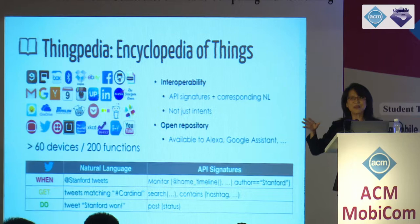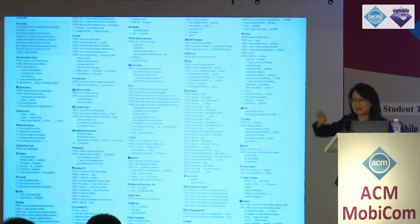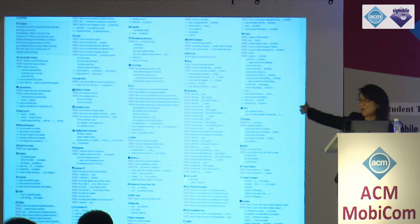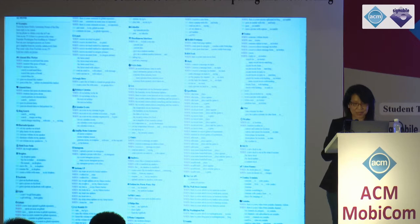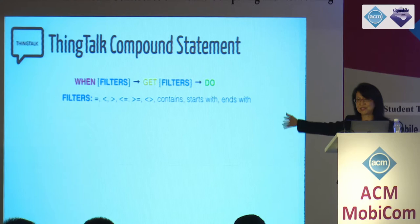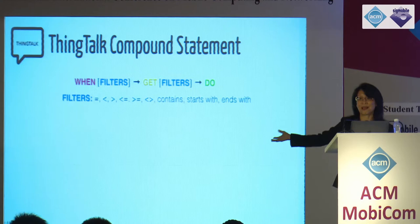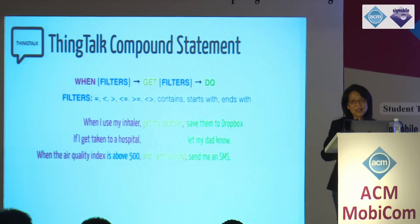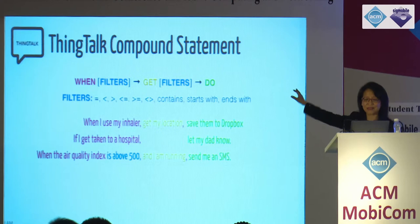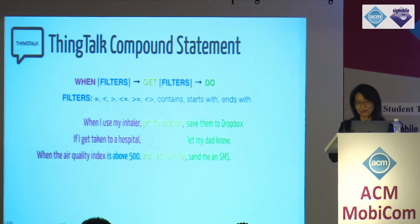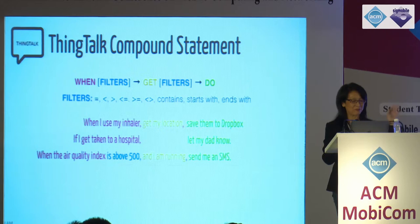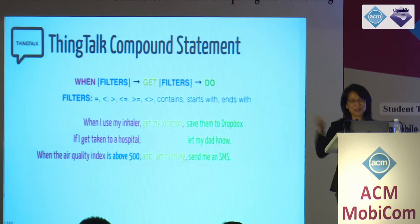Here is a high-level picture of all the different primitives in the repository. Even with a small repository, there is just too much information to work with using a graphical user interface — this is where the power of language comes in. ThinkTalk is a very simple grammar: when something, get something, do something, with filters based on types. For example, you can say: when Stanford tweets, or get the tweets and post an action. You can compose them in many ways — when the Bitcoin price reaches $10,000, search for a Bitcoin picture and tweet it with the caption 'I'm rich.'